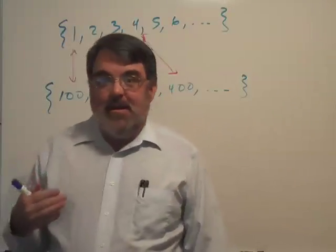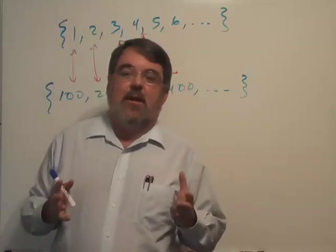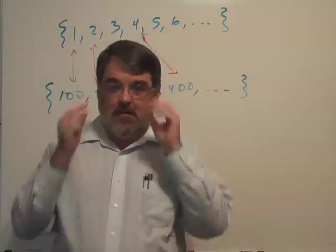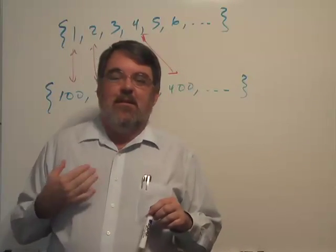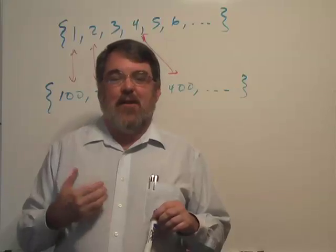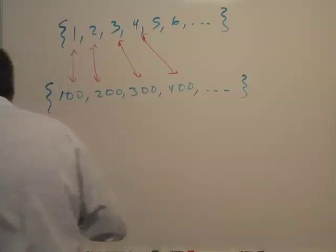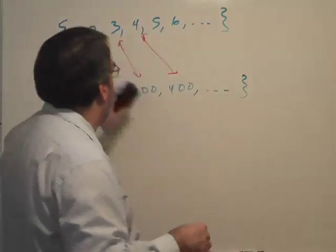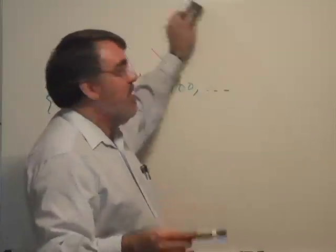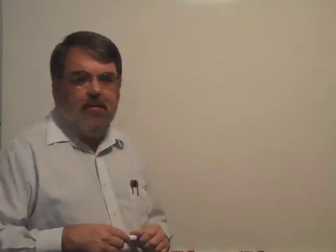It gets better than that, and here we come to an argument that Cantor made called the diagonalization argument. Cantor showed that the set of fractions, which mathematicians call the set of rational numbers, are countable. I'm only going to worry about the positive fractions. Let's keep it simple.